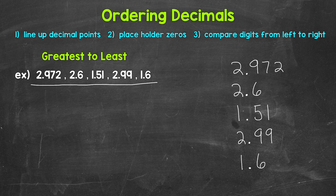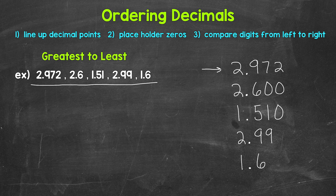Now this does look a little off since we have numbers going to different places. So what we can do is use placeholder zeros. Remember, zeros to the right of decimal digits do not change the value of the decimal. We need to find the decimal that goes to the furthest place to the right — that's 2 and 972 thousandths, which goes to the thousandths place. So we use placeholder zeros on the others: 2 and 6 tenths needs 2 placeholder zeros, 1 and 51 hundredths needs 1, 2 and 99 hundredths needs 1, and 1 and 6 tenths needs 2. Now this looks more lined up and neater, and this will help us order.